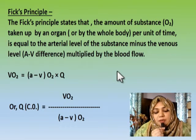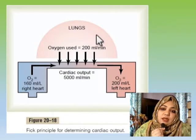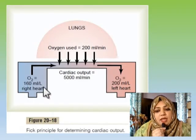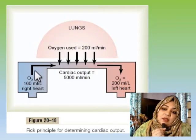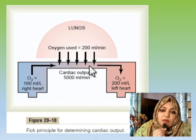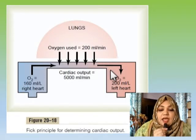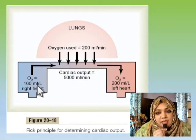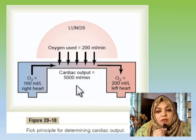Now let us look at this diagram. Here we have the lungs — oxygen enters into the lungs from the air. This is the pulmonary circulation. In the right heart, the oxygen concentration is 160 ml per liter. As blood flows through the lungs, oxygen is absorbed into the pulmonary circulation, so the oxygen content increases. In the left heart, the oxygen content is 200 ml per liter.